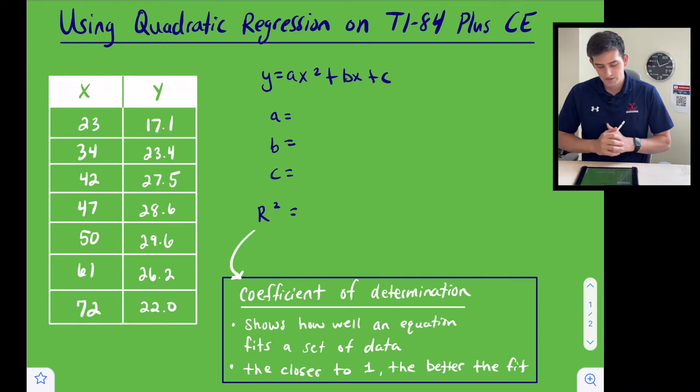So we're going to type these values into our calculator. It's going to give us a value for a, b, and c, and we're going to be able to write a quadratic equation in standard form. We're going to be able to see what r squared is. In this case, r squared is called our coefficient of determination, and it's going to show how well our equation fits our data. Just like linear regression, the closer that number is to one, the stronger the fit or the better the fit.